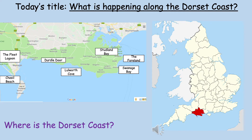So where is the Dorset coast? If you look at the map of the UK on the right hand side of the screen you can see where the county of Dorset is located, highlighted in red. We're focused on that coastline to the south of this county, and if you look at the map on the left hand side you can see some of the key landforms and features of this coastline.